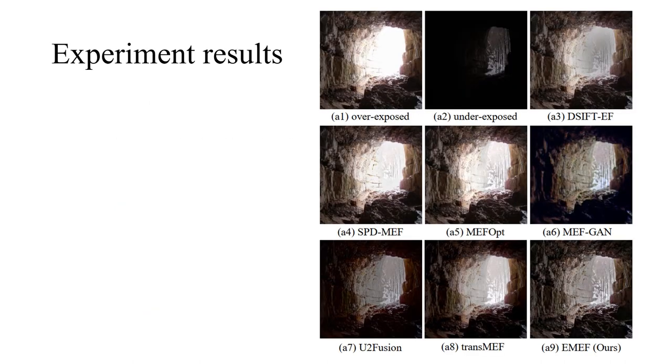The main goal of MEF is to make the dark region brighter while making the bright region darker so that more details can be maintained. In this case, the region inside the cave is dark and the region outside is bright. SPD MEF and MEF OPT failed to darken the bright region, while MEFGAN and U2 Fusion failed to brighten the dark region. The SIFT-F and TRANS-MEF managed to behave well in both regions but exhibit lower contrast and fewer details outside the cave compared with our EMEF.